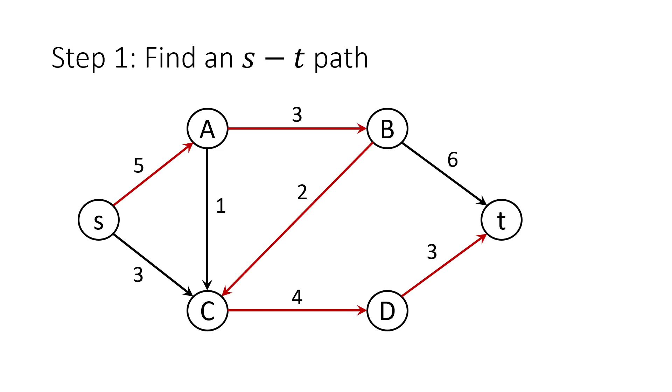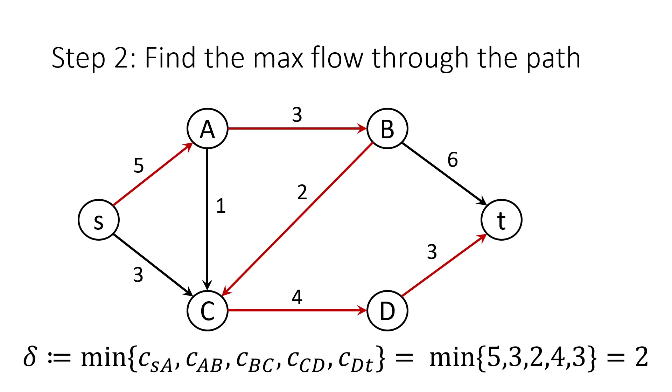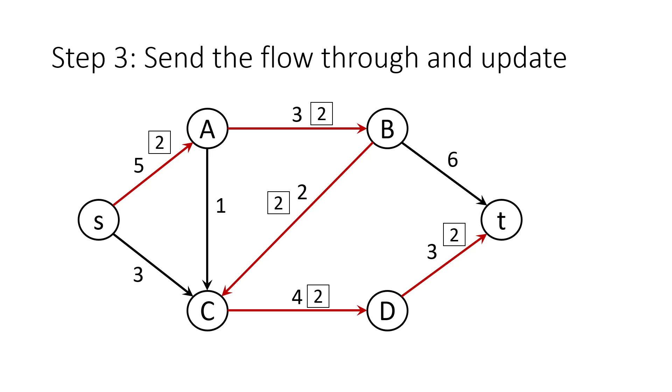We'll start with the same flow as we did in the previous example. Again, the minimum of these capacities is 2. And we update our graph.